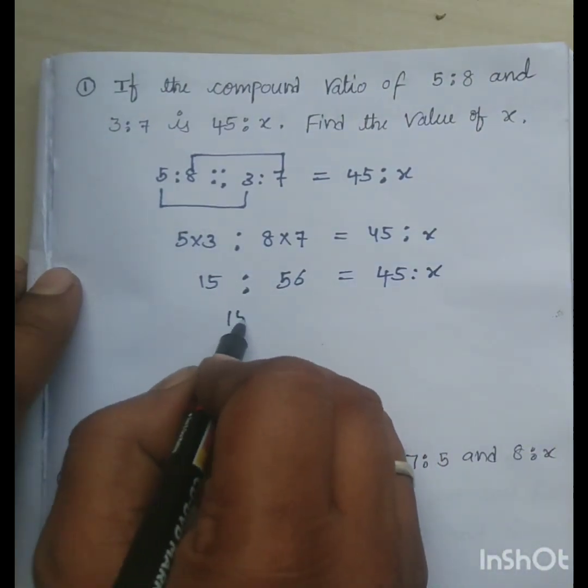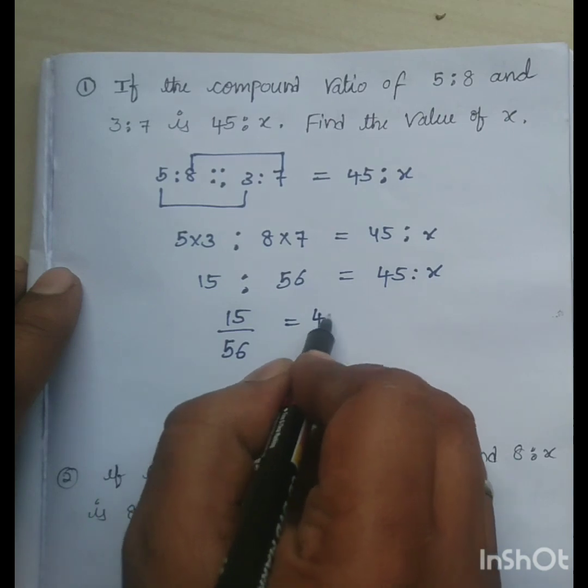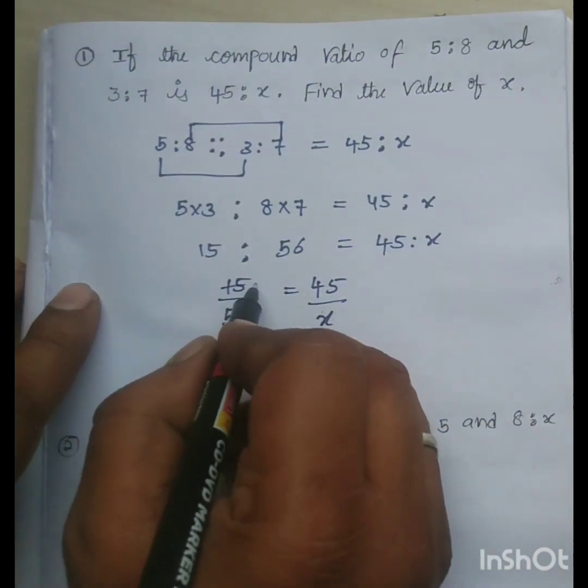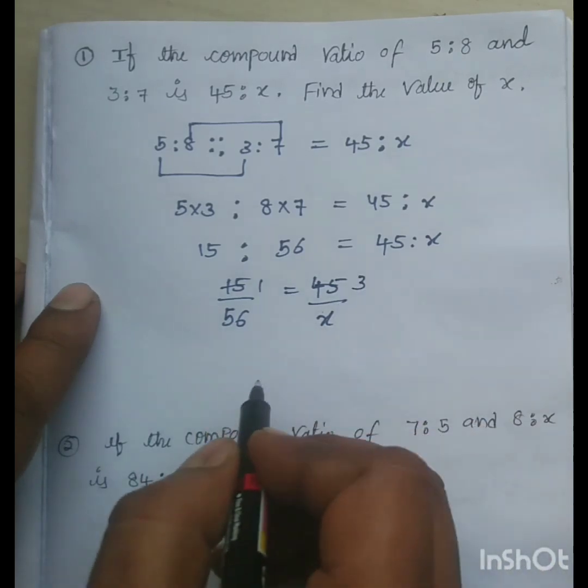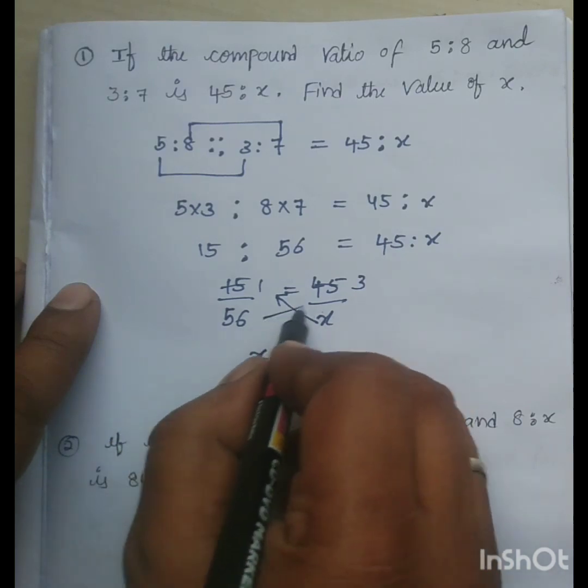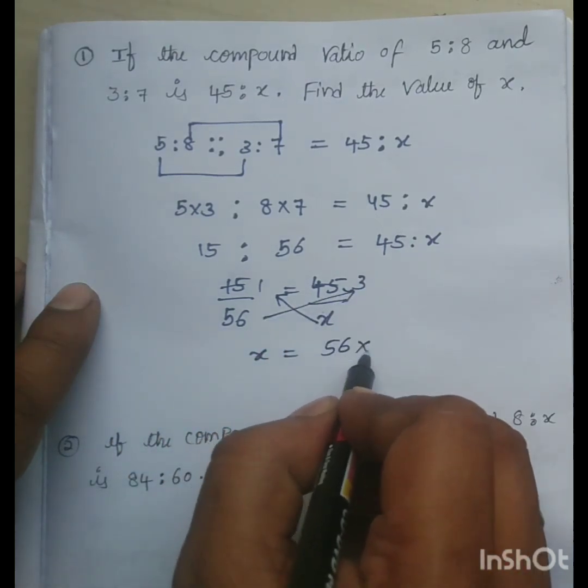So, this we can write as 15 by 56 is equal to 45 divided by X. 15 table, 1 times 15, 3 times 15, now cross multiplication 1 into X, X is equal to 56 into 3.